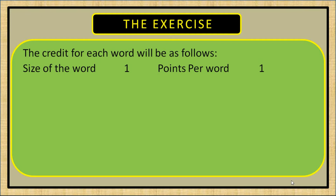If the size is 1 letter, points per word will be 1. If size is 2, points will be 2. For size 3, points per word will be 5. For size 4, points per word will be 10. For size 5, it is 20. For size 6, it is 40. For size 7, it is 100. And for words of size 8 letters, the points per word will be 200.